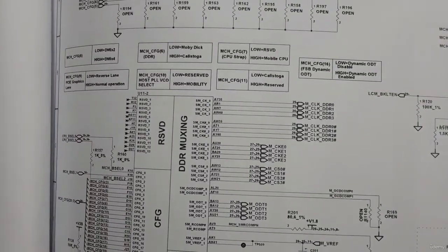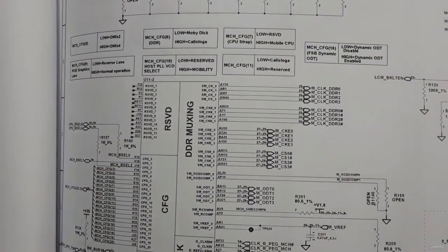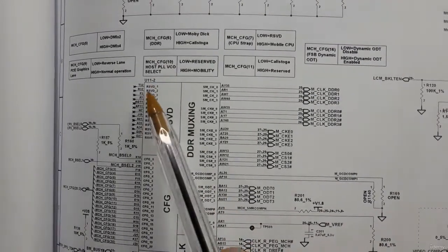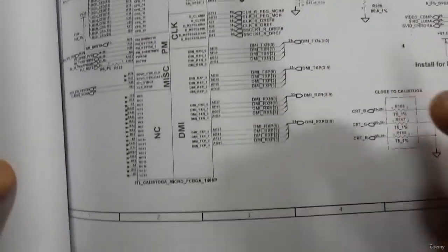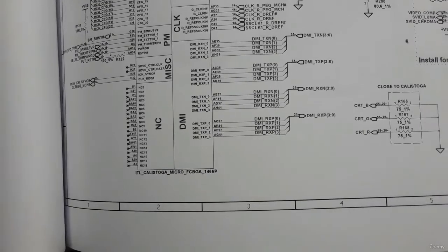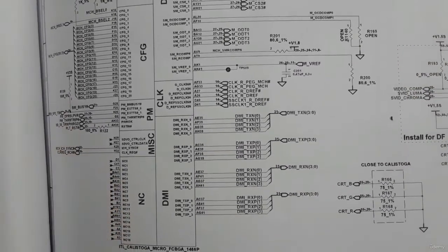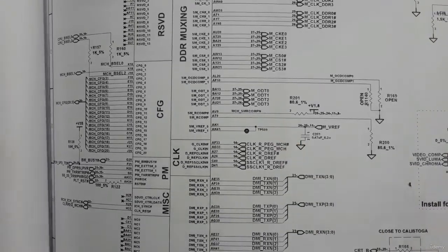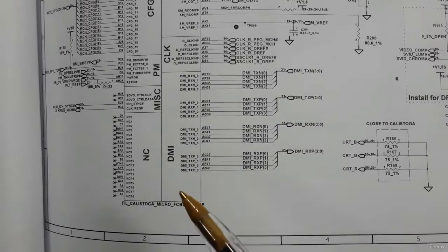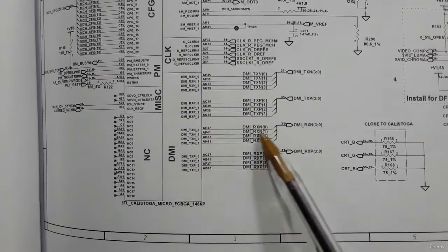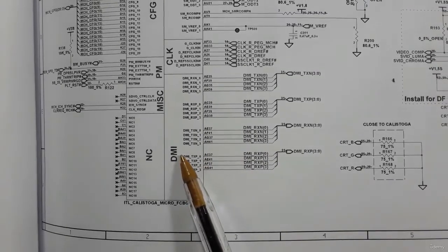Here we have U11-2. As you can see, we have the Calistoga — this is the GMCH. It also contains many controls, the same as the processor. Here we have the Direct Media Interface controller, which is the controller that connects between the GMCH and the ICH, as we have seen before.